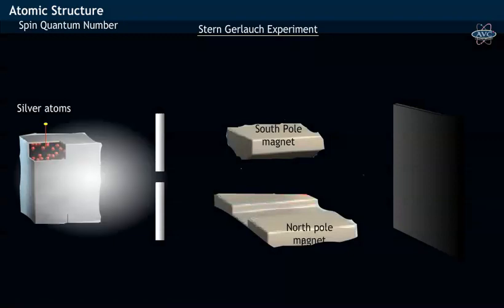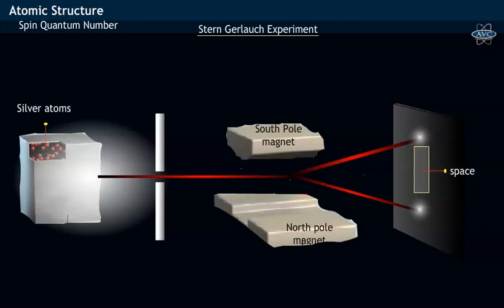In Stern-Gerlach experiment, a single beam of silver atom generated from hot silver furnace is allowed to pass through the non-homogeneous magnetic field. On passing through the magnetic field, the single beam of silver atom splits into two beams and strikes the photographic screen at different points with a space in between these two points. This clearly means that a discontinuous pattern of deviation of silver beams was observed.